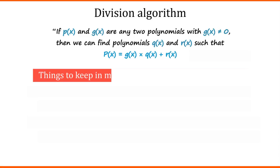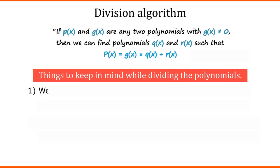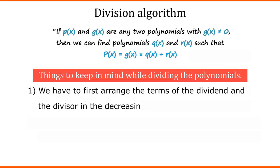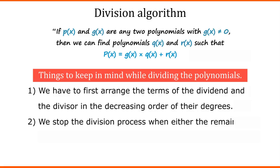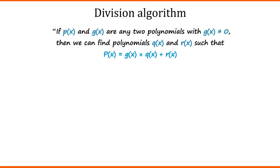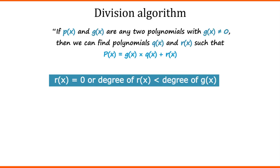Also, there are some things to keep in mind while dividing the polynomials. First, you have to arrange the terms of the dividend and the divisor in decreasing order of their degrees. We stop the division process when either the remainder is 0 or its degree is less than the degree of divisor. Now, friends, remember we will take polynomials of greater degree as dividend and smaller degree as divisor, where r of x equals 0 or degree of r of x is less than the degree of g of x. This is known as division algorithm of polynomials.